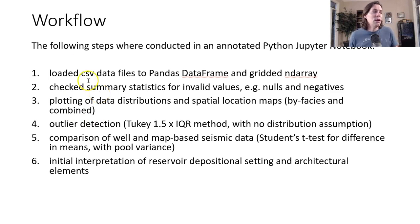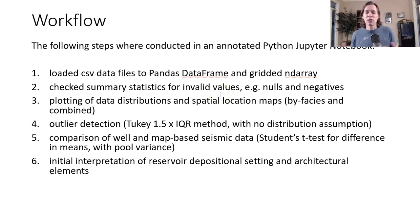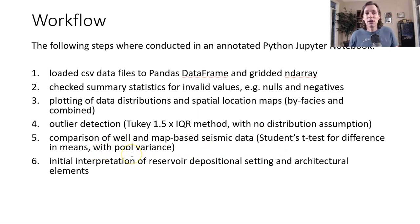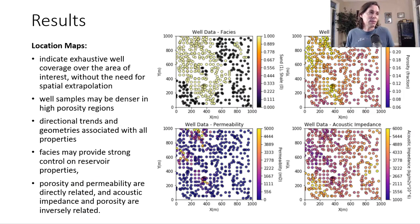For our workflow, we loaded the comma-delimited files provided into Jupyter Notebook pandas data frames for the well data tables and the array for seismic information. We checked summary statistics looking for invalid values, missing values, negative values, and porosities greater than one — anything non-physical. We plotted data distributions and spatial location maps by facies and combined. For outlier detection, we used the Tukey 1.5 times interquartile range approach, which has no distribution assumptions and is flexible for skewed and symmetric distributions. We also conducted a Student's t-test for difference in means with pooled variance for the well versus map seismic comparison.